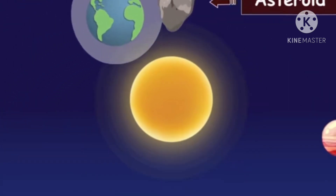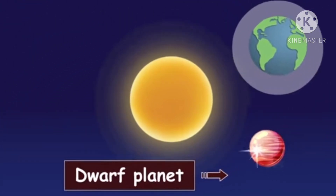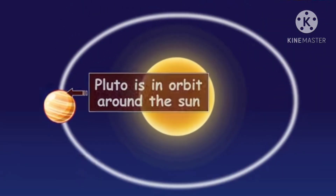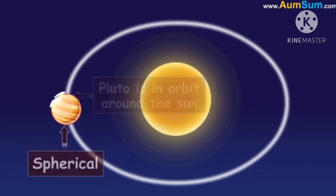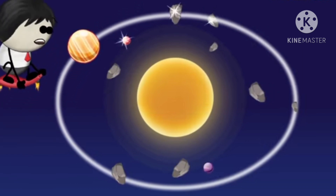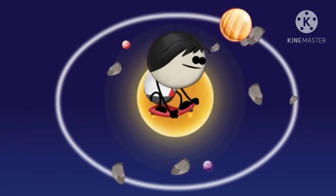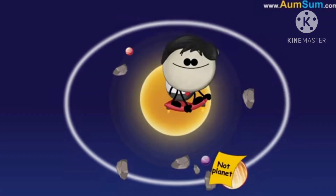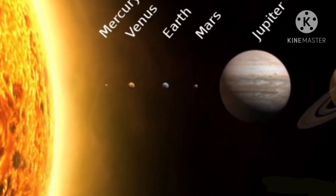This basically means that using its gravity, a planet should have removed asteroids and dwarf planets out of its path, and thus cleared its neighborhood. Now Pluto is in orbit around the Sun and is spherical in shape, but since Pluto's neighborhood has many other objects and it has not cleared its neighborhood, it is not called a planet anymore — it is called a dwarf planet. We therefore now talk of only eight planets.